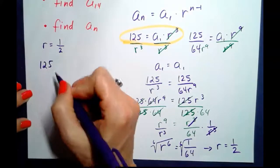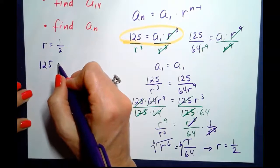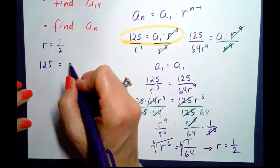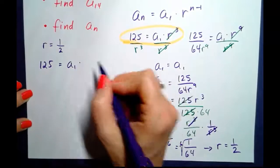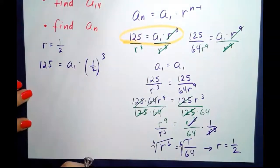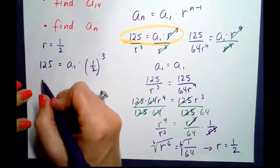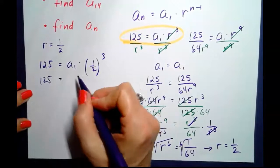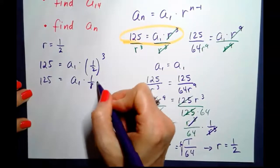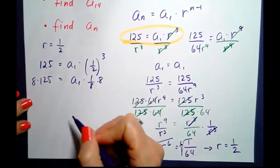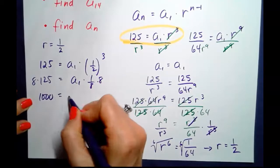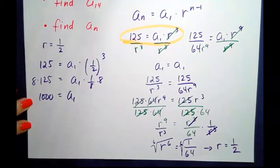So 125 equals a sub 1 times r, which is 1 half to the third power. 125 equals a sub 1 times 1 half to the third, which is 1 eighth. 8 times 125 is 1000. So a sub 1 is 1000.